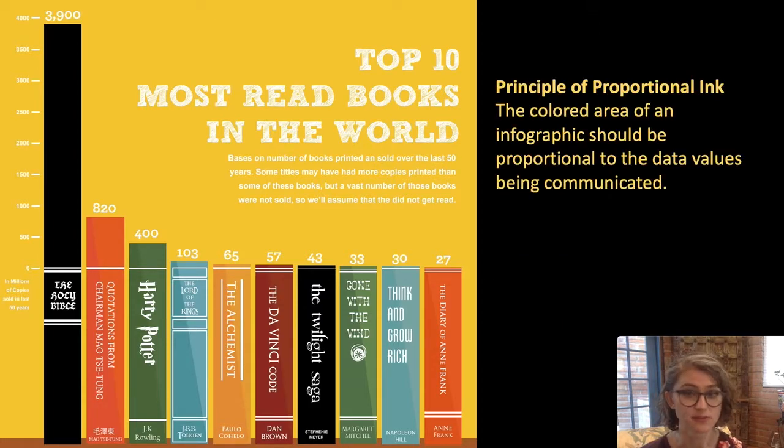One common guideline in information visualization is called the principle of proportional ink, which says that the colored area of an infographic should be proportional to the data values being communicated. This means a visualization should always keep the size of a colored region proportional to the value that it's representing.